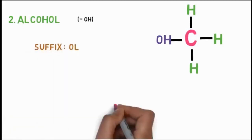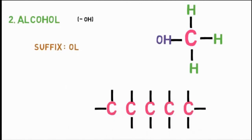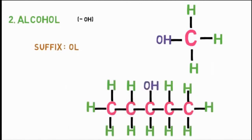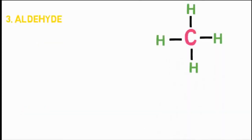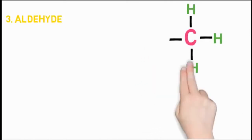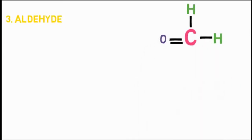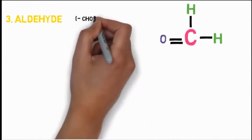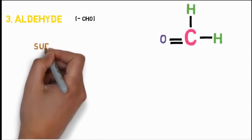Halogen naming includes addition of prefix chloro, bromo, fluoro or iodo with respect to their positions. For example, consider pentane with chlorine attached at position 2 — we write pentane first and add '2-chloro' to its left, so it is 2-chloropentane. If a hydrogen is replaced with an OH group, those are called alcohol functional groups. Their naming includes addition of suffix '-ol' with respect to their position.